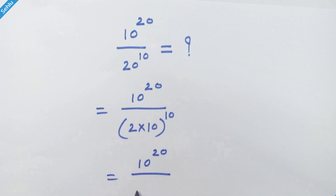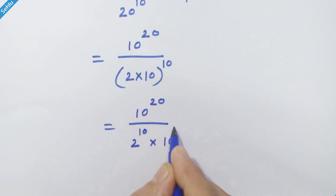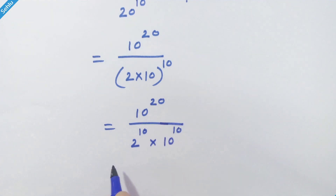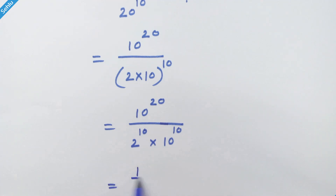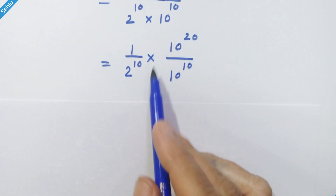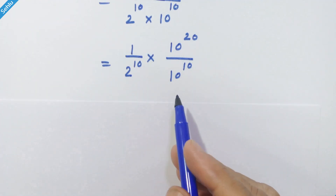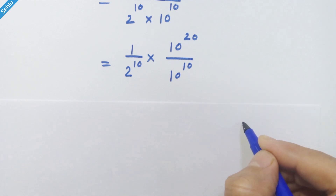So we can write it like 10 raise to 20 upon 2 raise to 10 into 10 raise to 10. Now we will split this expression by separating 2 raise to 10, so our next step will be 1 upon 2 raise to 10 into 10 raise to 20 upon 10 raise to 10.